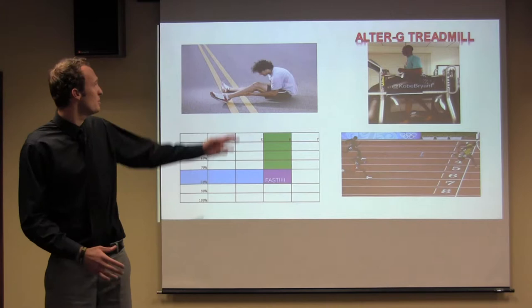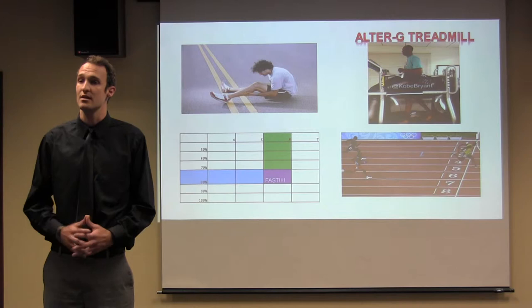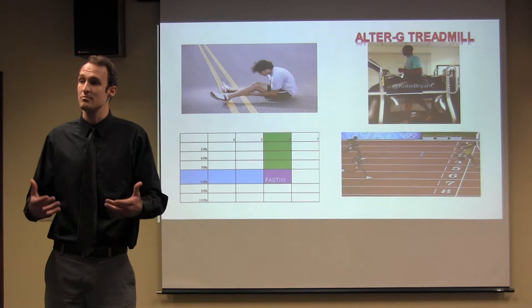For those of you who don't know, an Alter-G treadmill, pictured there, is a lower body positive pressure treadmill that allows you to run as little as 20% of your full body weight. You run with your legs inside of a bubble with such high air pressure inside that it lifts you up. It actually kind of feels like running on the moon. It's very cool.